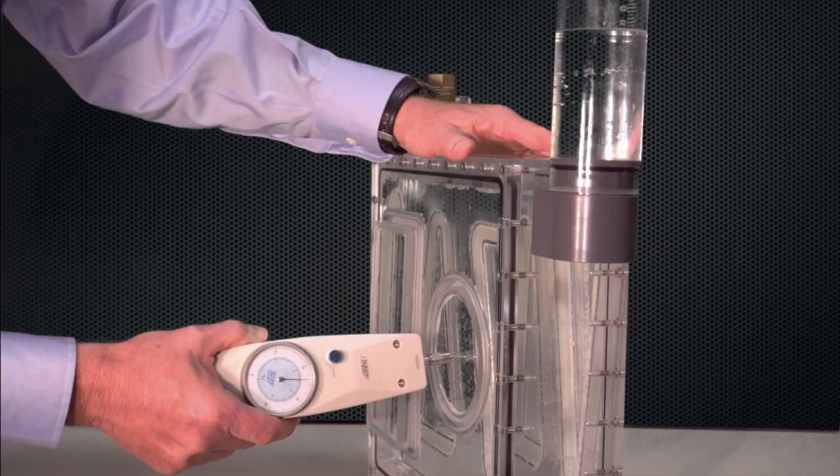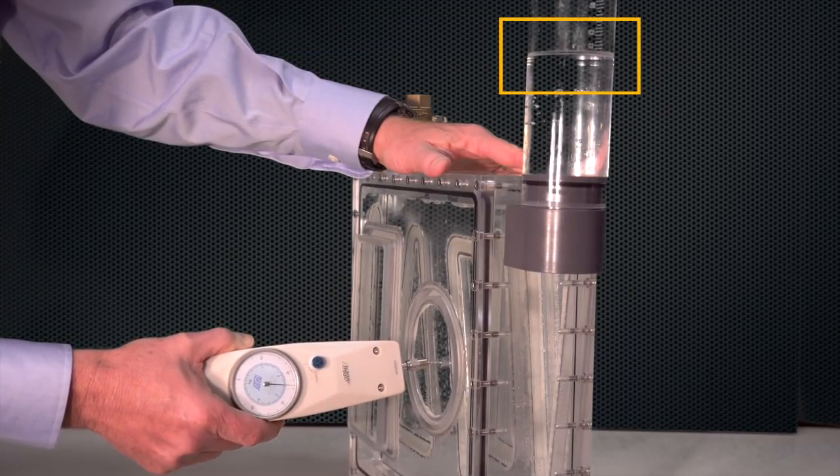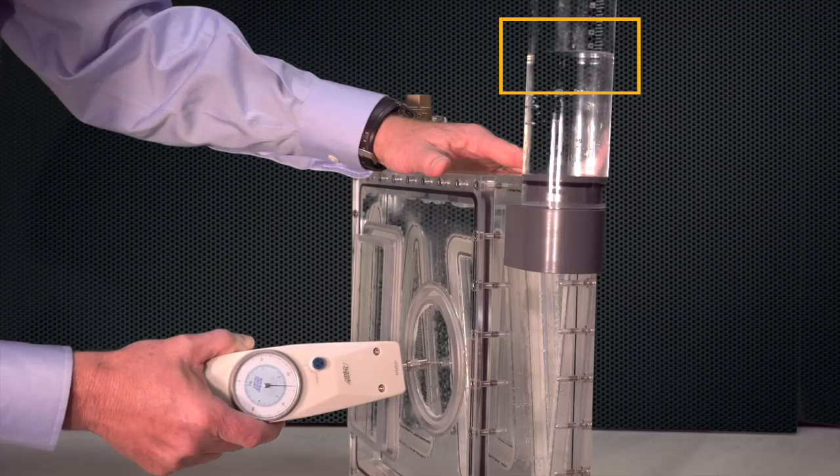An important detail is that we measure the water depth, D, from the top of the panel when the panel is flush with the box. We do that because the depth changes a bit when the panel is moved in and out.